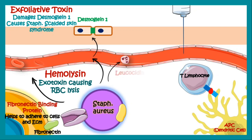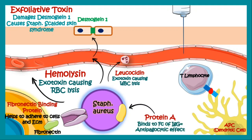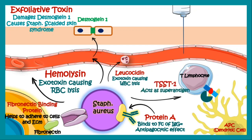It has a leukocidin naming exotoxin, which causes WBC lysis. It also has a protein A on its surface, which binds to the Fc component of IgG and imparts an antiphagocytic effect. It produces a toxin known as Toxic Shock Syndrome Toxin-1. It acts as a superantigen and interacts with the MHC class 2 and T-lymphocyte interaction, causing hyperactivation of T-lymphocytes, leading to release of a lot of IL-2, TNF-alpha, and interferon gamma.